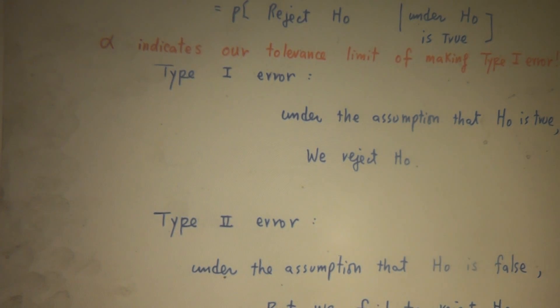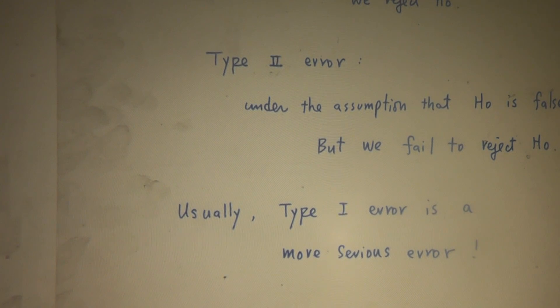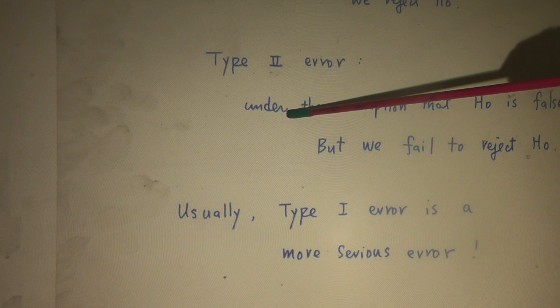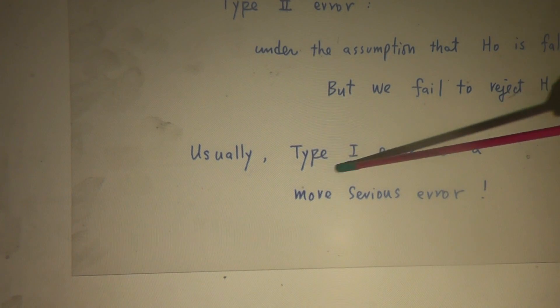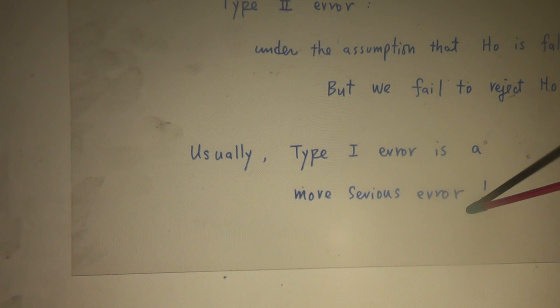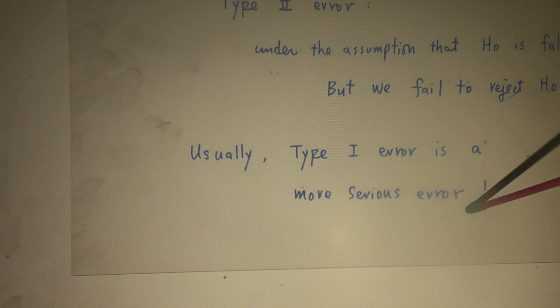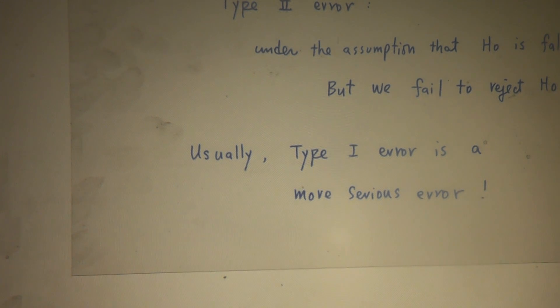And what's Type II error? Type II error is that under the assumption that H naught is false, but we fail to reject H naught. And usually, Type I error is a more serious error. That's why we choose a very small probability, say alpha equal to 5% or 1%, of making the most serious mistake. We allow only a very small chance, say probability equal to 5% or 1% chance of making the most serious mistake. Now, to understand better, next I'm going to give you some example that explains the relationship between Type I error and Type II error.